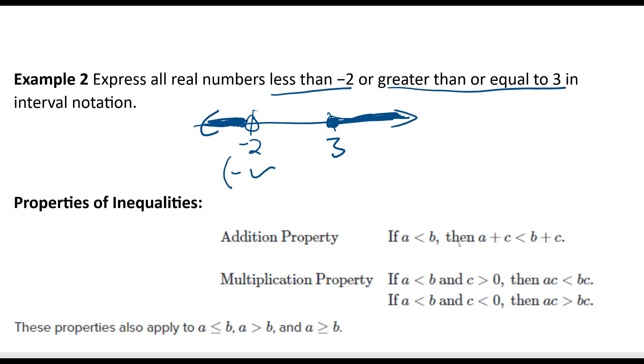So we say negative infinity to negative 2, and then we have 3 to infinity, but we have to join these together. So these are not overlapping. So we do this big U for union. And I kind of exaggerated the U, it doesn't have to be that big, it could just be a capital U. But it's the union of these two sets that's bringing them all together.